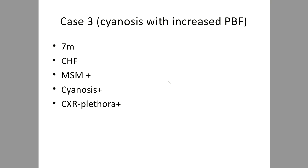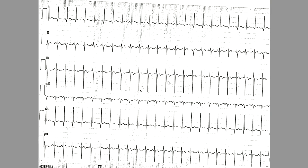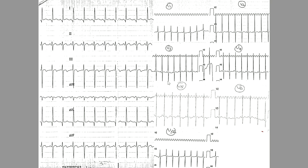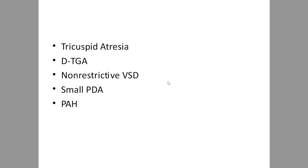Case 3: A 7-month child with cyanosis and increased pulmonary blood flow manifested as heart failure. X-ray shows plethora. Look for LV versus RV dominance and counterclockwise loop. Unlike the previous case, there is some RV representation — V1 shows R-waves that are not very small — while V6 shows well-developed LV forces and good Q-waves in lateral leads. This pattern generally occurs in tricuspid atresia with transposition, where the VSD is commonly non-restrictive.